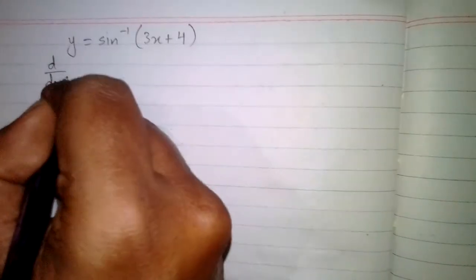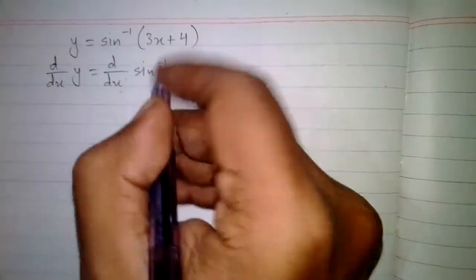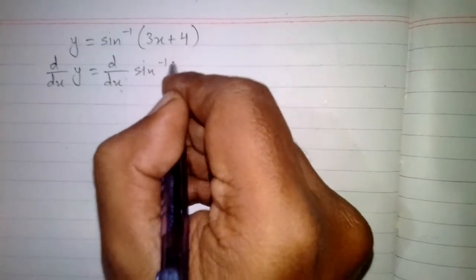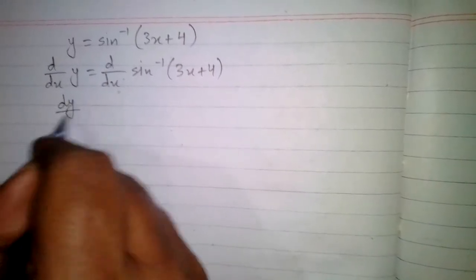So first of all we will apply derivative on both sides. So we have d by dx of y is equal to d by dx of sine inverse 3x plus 4. Now this can be written as dy by dx.